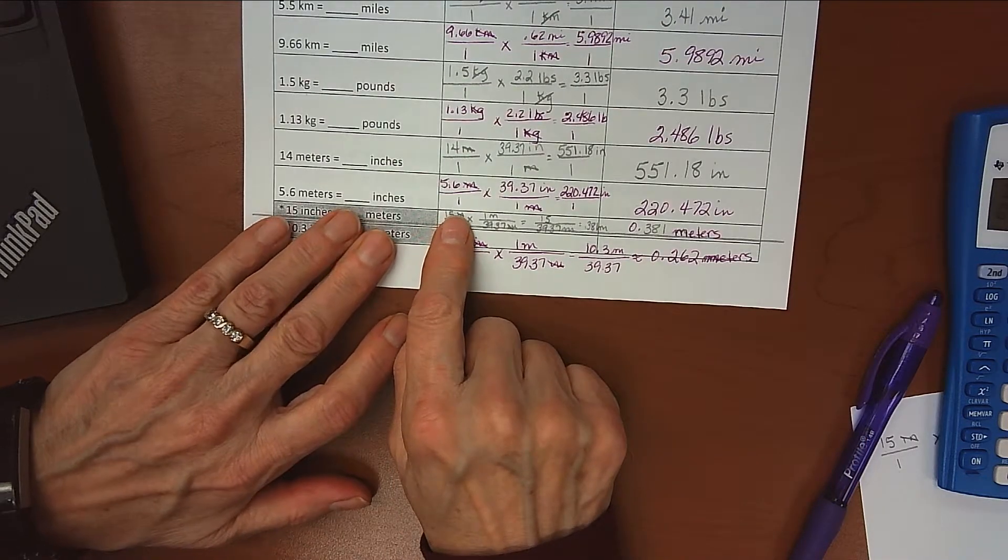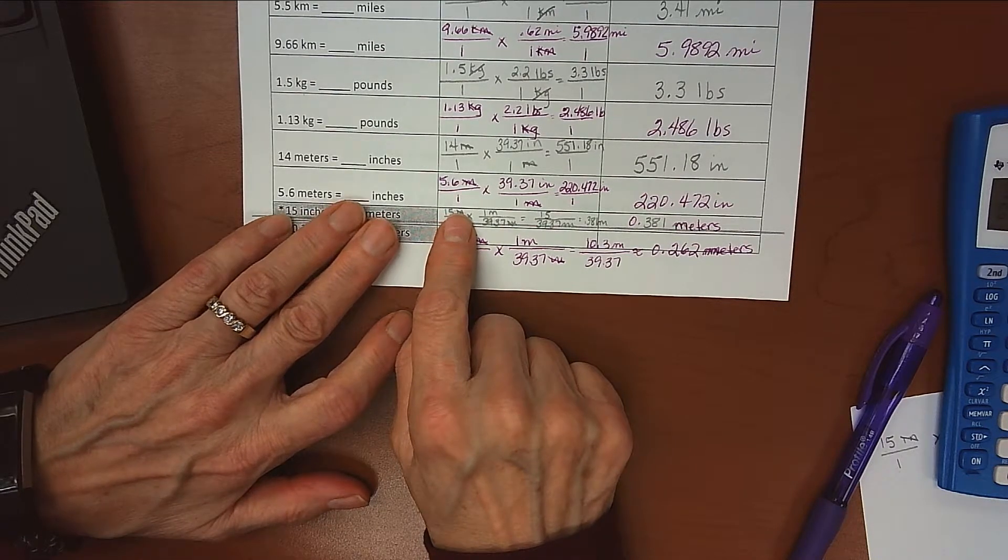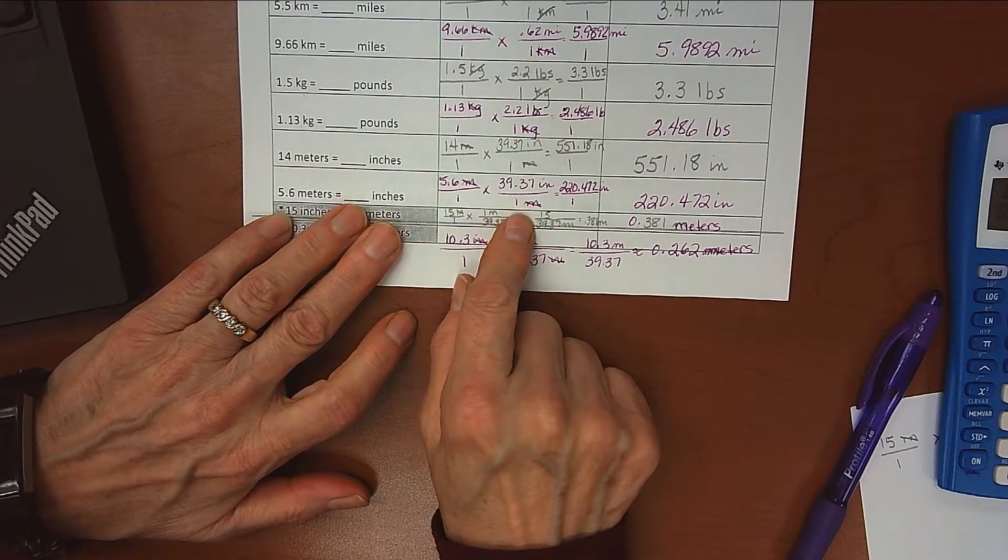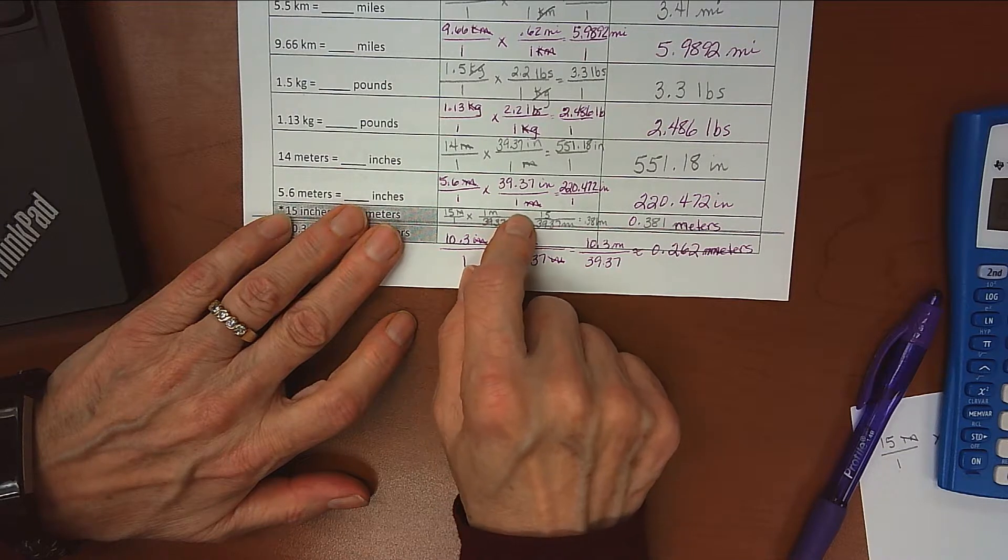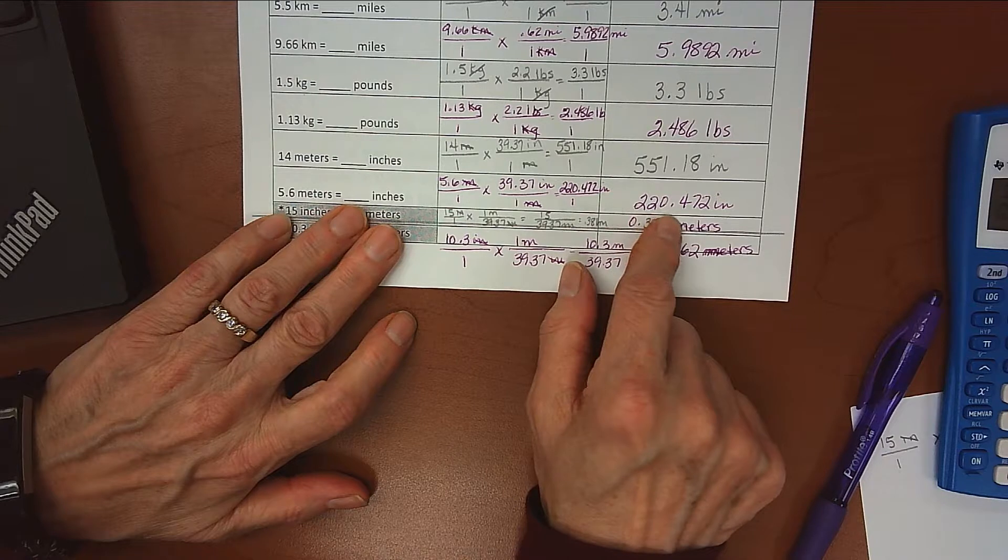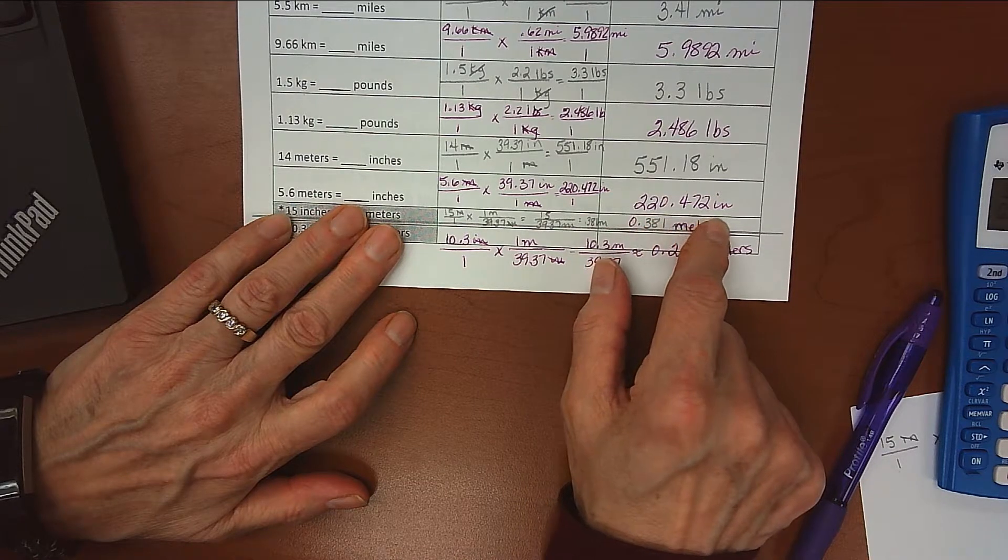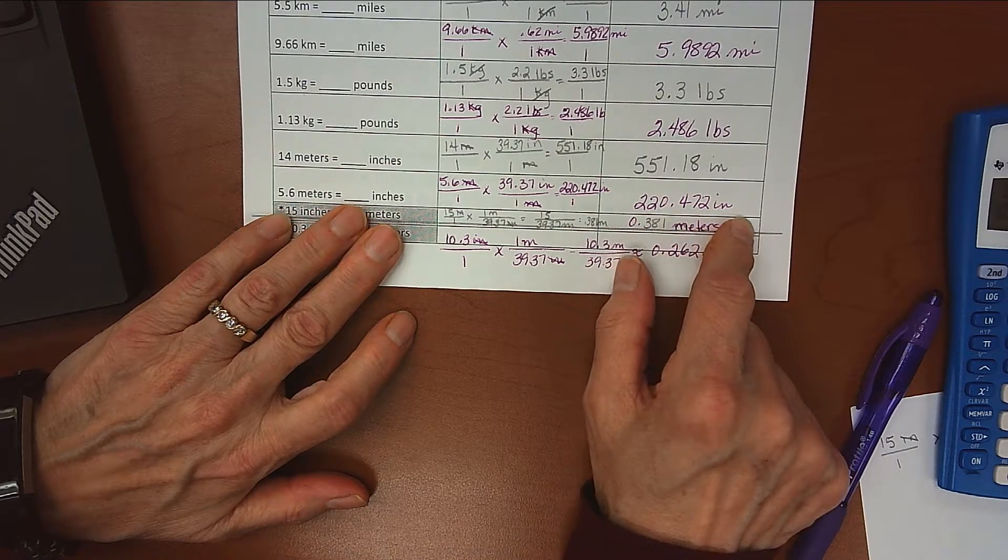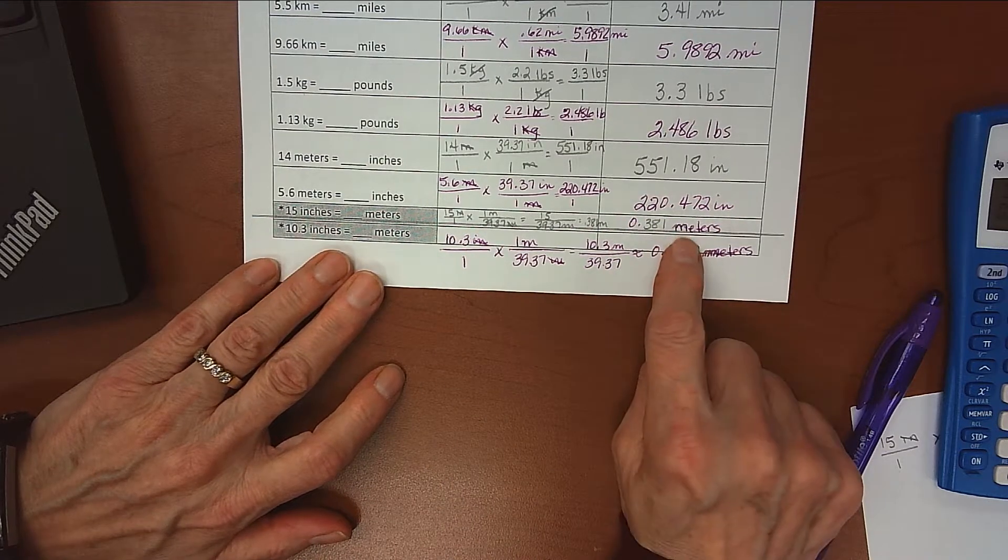Alright, over here 5.6 meters converted to inches. My conversion factor was 39.37 inches is 1 meter. When I multiplied that out I got 220.472 inches.